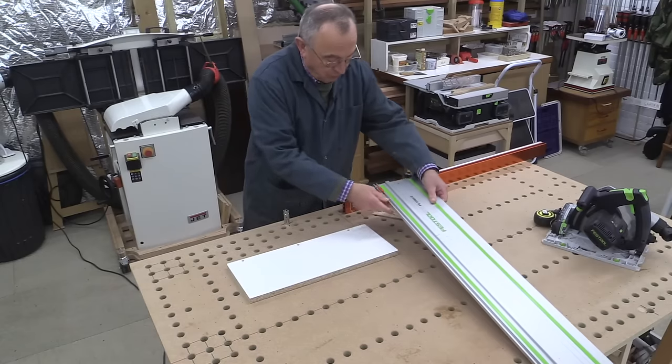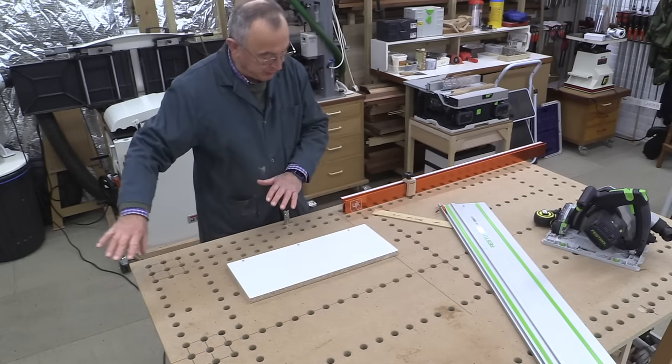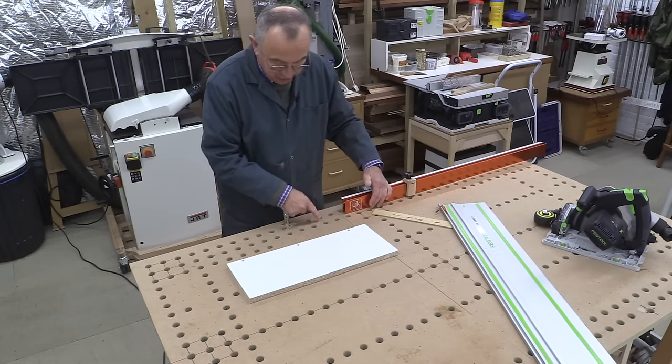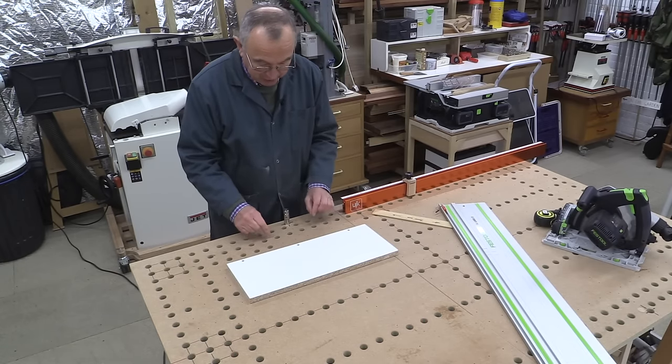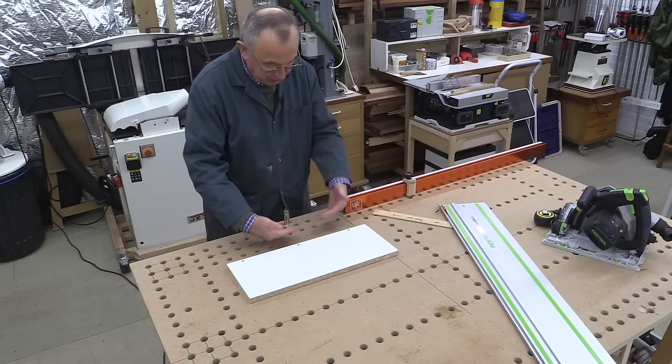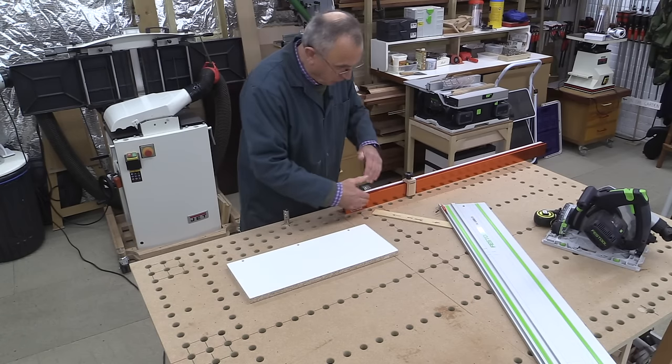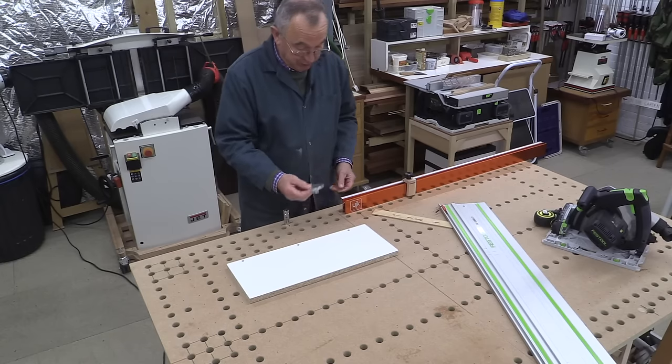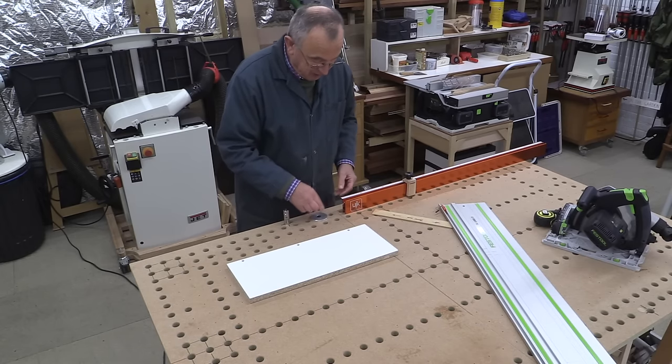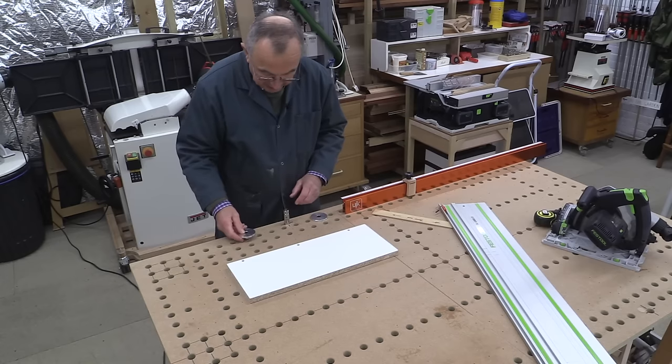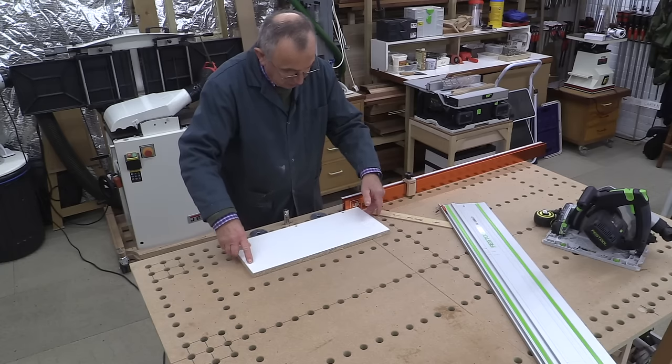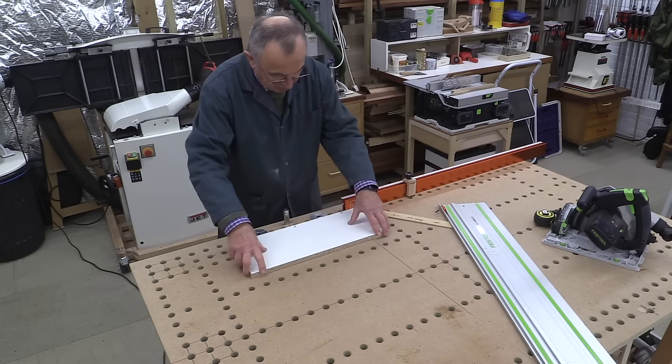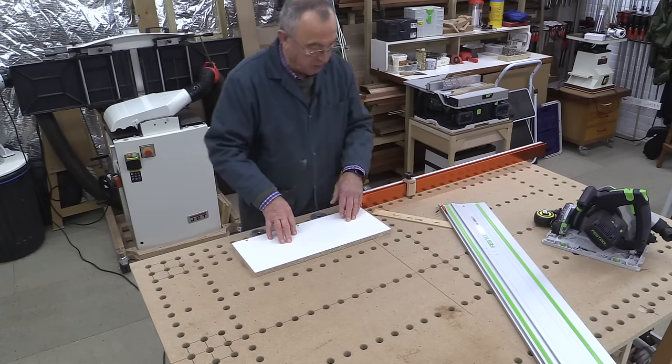Now, of course, it's all very well having the fence here, but your stock will be going along here. And because of the way this fence is set up, you can't use dogs along here as we did in the early case to push your stock against. Because the stock also has to be flat against here. But Axminster provide with this kit these little gizmos. And these provide a continuous straight line with the fence. And so you can do your cuts and get them absolutely spot on.